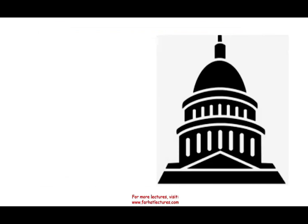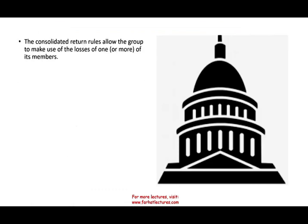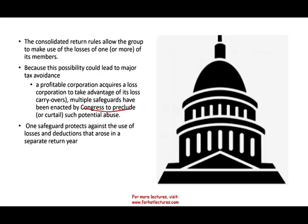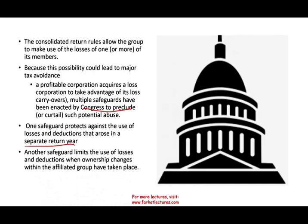The consolidated return allows one group to use losses to offset another company's income — which is really good. But Congress is aware of this. This possibility could lead to major tax avoidance, because companies will buy up other companies that have losses and use them to offset their income. So Congress created safeguards to limit those potential abuses. One safeguard is against the use of losses and deductions that arose in a separate return year — if you buy an asset that has losses from prior years, you cannot use them in the current year. Another safeguard applies when ownership changes within an affiliated group.